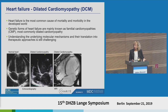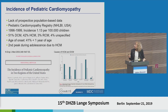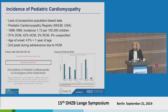Heart failure is still the most common cause of mortality and morbidity. We work on the genetic forms, the familial cardiomyopathies. It's actually a rare disease, and there's a lack of prospective population-based data. There's one landmark paper from 2003 by Steven Lipschulz that showed that DCM and HCM are the most common cardiomyopathies, and the age of onset is very early in children — 41% in this study had onset within the first year of life.